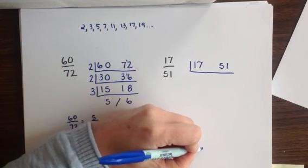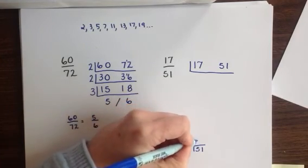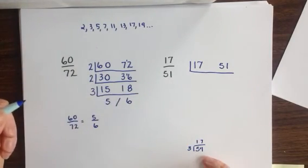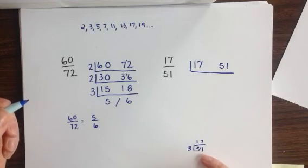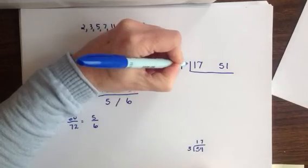Doing some scratch work on the side, I discover that 3 fits into 51 exactly 17 times. So it is, in fact, a 17 times table. So coming back up here to my original problem, I'm going to divide both 17 and 51 by 17.